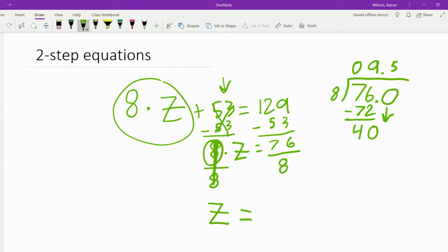So we need to put 5 up here, and 8 times 5 is 40, so 40 minus 40 is 0. So now we have our decimal answer up here, that is 9 and 5 tenths.